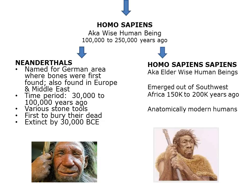At the same time the Neanderthals were active, we had another group called Homo sapiens sapiens — the elder wise human beings — who emerged out of Southwest Africa about 200,000 years ago. The important thing to know about Homo sapiens sapiens is that anatomically they are the same as we are today: the same brain size, physiology, the way they walked, digested food. So we really look at Homo sapiens sapiens as the first real humans as we exist today.